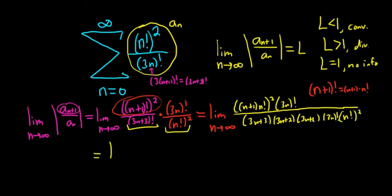This is equal to a really messy limit as n goes to infinity. This piece here is being squared, so I'm going to break it up. It's going to be n plus 1 squared times n factorial squared, using properties of exponents. These cancel, so we can get rid of those.